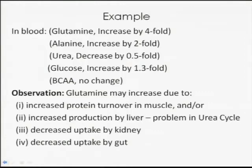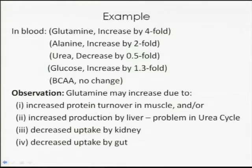What can possibly go wrong? A doctor would not be able to answer that — it's too difficult for an MD. You'd go to our expert, Dr. Richard Hansen, and he would pick glutamine increase alone and say it could be due to four problems: increased protein turnover within the muscle; increased production of glutamine within the liver, possibly signaling a problem with your urea cycle; or decreased uptake of glutamine in kidney or gut.